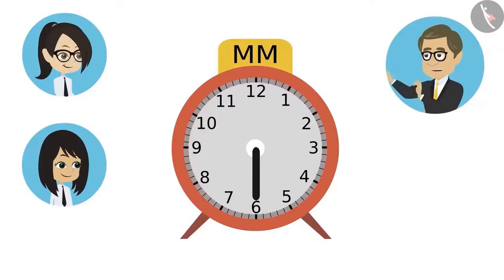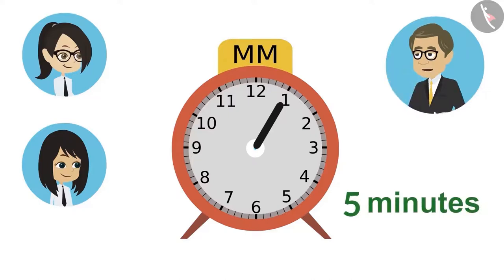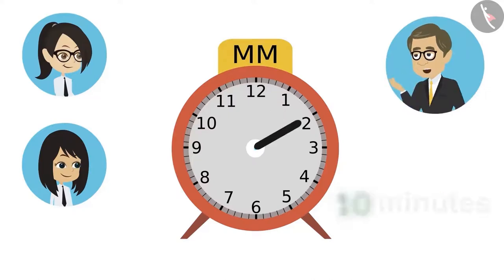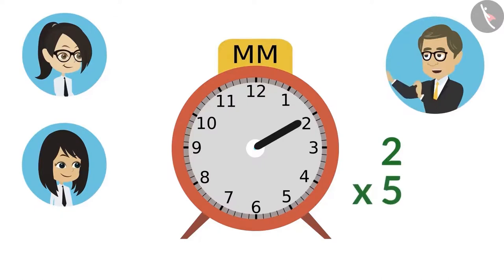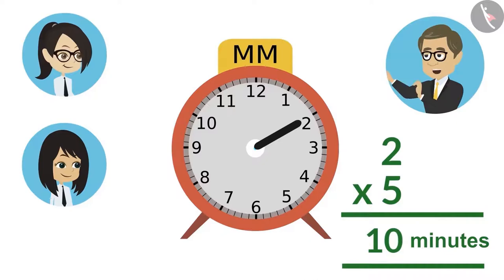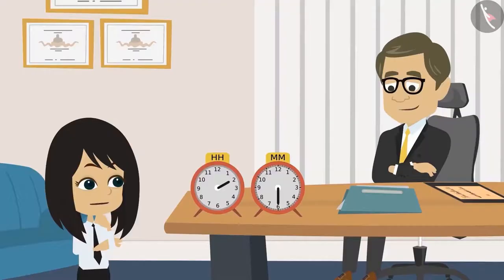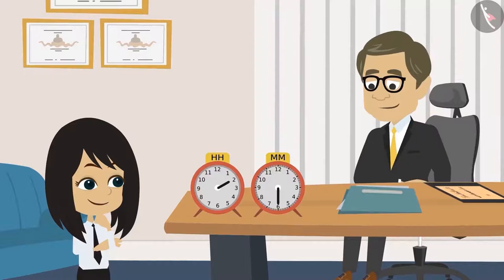The clock has numbers from one to twelve. The difference between every number is five minutes. When the minute hand is on one, then it is said to be five minutes. The same way, when the hand is on two, then it means ten minutes have passed. Meaning, multiplying the number where the minute hand is with five will tell us how many minutes have passed. Got it, Neha? Yes, Sir. I will try.